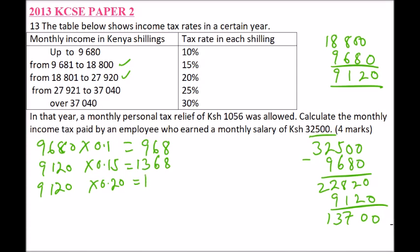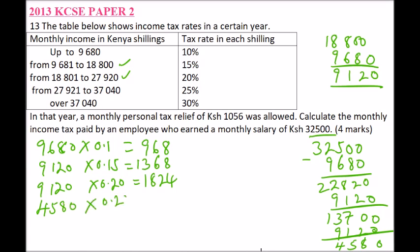We subtract 9,120 from our remaining balance, which gives us 4,580. Since 4,580 is below the bracket width of 9,100, we only tax this remaining amount. We multiply 4,580 by 25%, which is 0.25, and that gives us 1,145. Use a calculator to confirm.